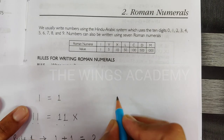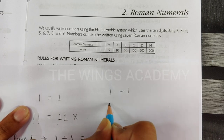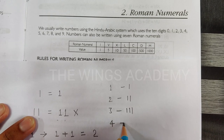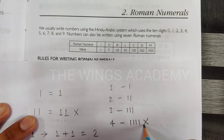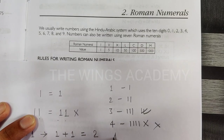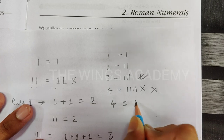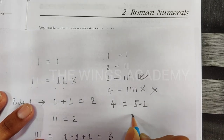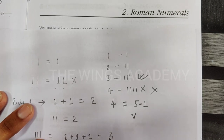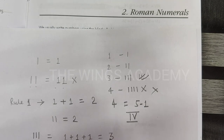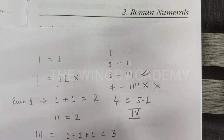We write I for 1, double I for 2, and triple I for 3. If we need to write 4 in Roman numerals, we cannot write I four times — that would be wrong, because any Roman numeral can repeat a maximum of 3 times, not 4. So what will be the value of 4? We write it as 5 minus 1, which is IV. This leads us to Rule Number 2.